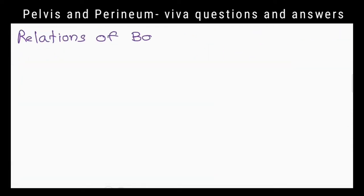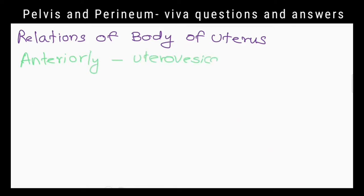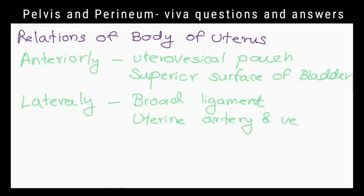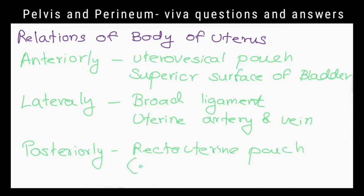What are the relations of the body of the uterus? Anteriorly, the uterovesical pouch and superior surface of the bladder; laterally, the broad ligament, uterine artery and vein; posteriorly, the pouch of Douglas.